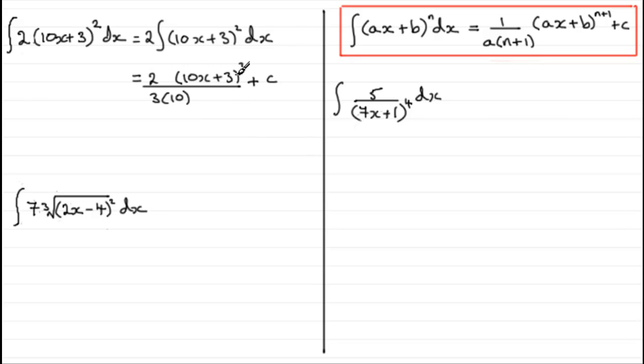That's because if we were to differentiate (10x + 3)³, we would end up putting a 3 at the front and multiplying it by the differential of the 10x + 3. That would give us a 10, and we end up having to cancel them out, the 3 and the 10.